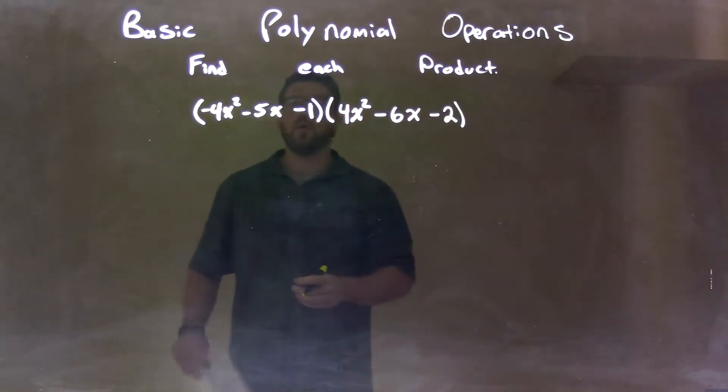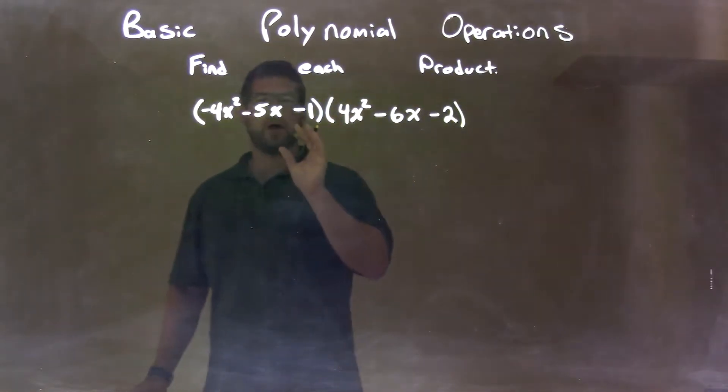What I want to do here is multiply all parts of my first parenthesis by all parts of my second parenthesis. Just because there's three terms in each one doesn't mean we can't follow the same process.